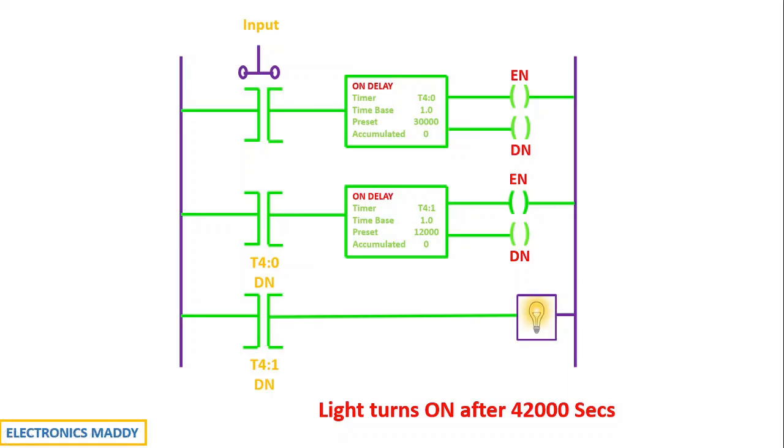But the question is, why do we need cascading? Why can't we use one particular timer to count 42,000 seconds? That might be a common question you might be having now. The answer is pretty simple and straightforward. In certain PLCs, the maximum count value of timers might be 32,767.